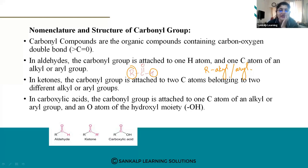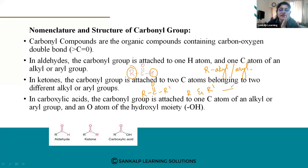Next, in ketones, the structure is RC(=O)R'. The carbonyl group — that is C=O — is attached to two carbon atoms of different alkyl or aryl groups, R and R'. Both substituents on the carbonyl carbon are carbon atoms.